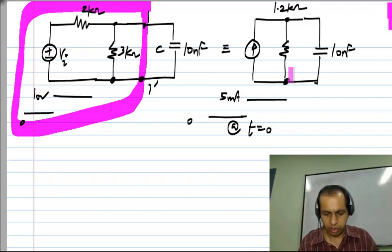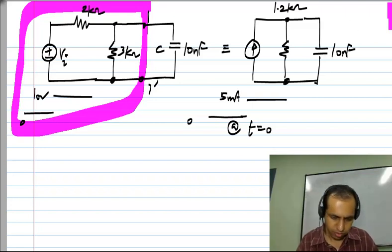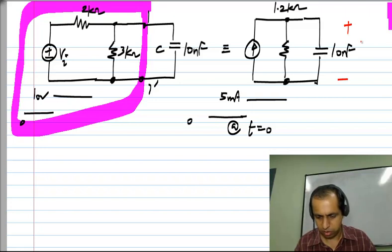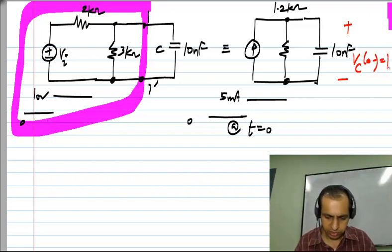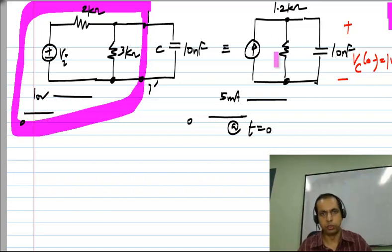So now, again it is quite easy to solve, this gives you a slightly different viewpoint. Now, what happens is that, again let's assume that VC of 0 minus is 1 volt and we do not have infinite currents flowing through the capacitor, so VC of 0 plus will also be 1 volt.